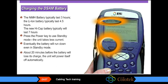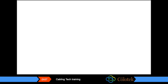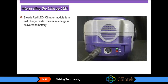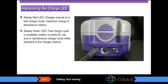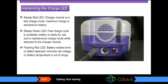About 20 minutes before the battery will lose its charge, the unit will power itself off automatically. Recharge with the plug charger or car charger. A steady red LED on the battery module means it's in fast charge mode and maximum charge is being delivered to the battery. A steady green LED means the fast charge cycle is complete and the battery is ready for use in maintenance charge mode. A flashing red LED means a battery-related error or defect is detected, or a min-max cell voltage or battery temperature is out of range.